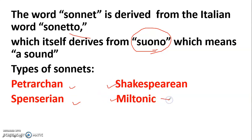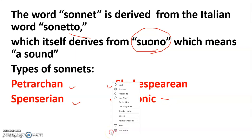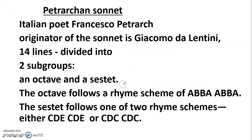The Miltonic sonnet is the only one not yet discussed in detail on this channel; the rest have been covered. Links are provided in the description box for those who want full information. Today's topic is Shakespearean sonnet versus the other sonnets, but I will briefly cover each type first for new viewers.